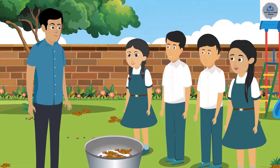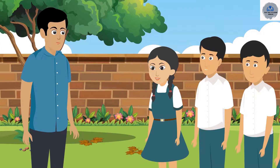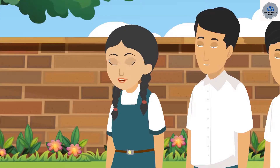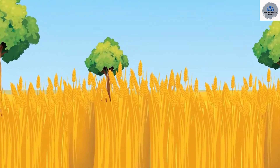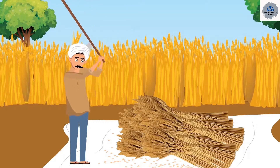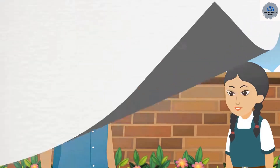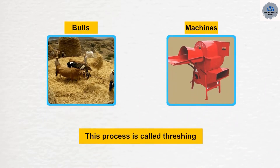Can anyone explain what happens in this process? Rohit Bhaiya, with the help of air, light substances are removed and heavy substances remain. Aman is right. This process is mostly used to remove impurities from crops. And what is the process of threshing? The grains of wheat or rice are dried in the sun, tied in a bundle, and then beaten up. During this time, the grains are separated from the plant. This process is sometimes done with the help of bulls or machines, and it is called threshing.